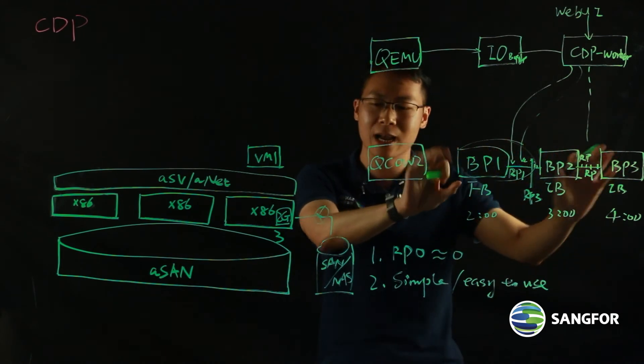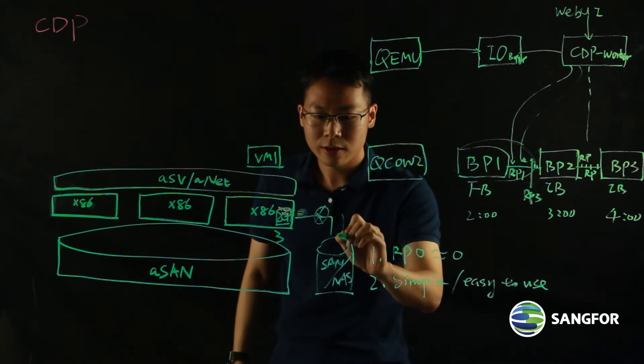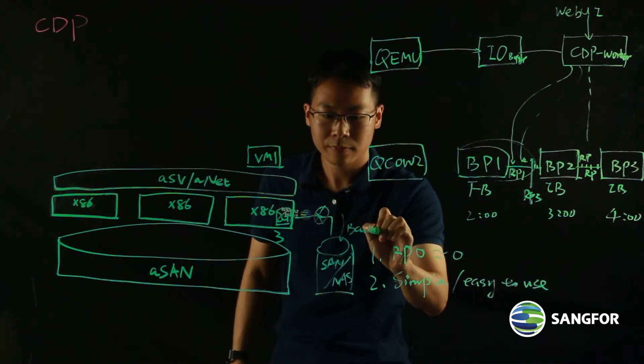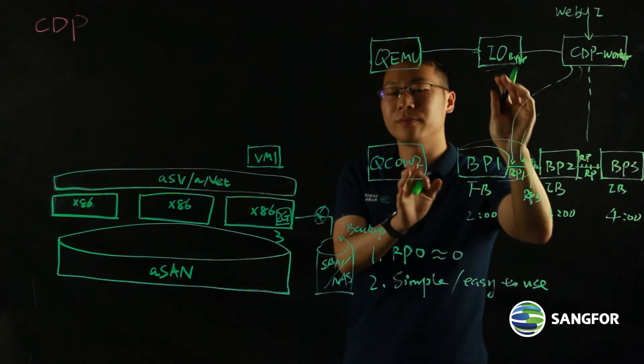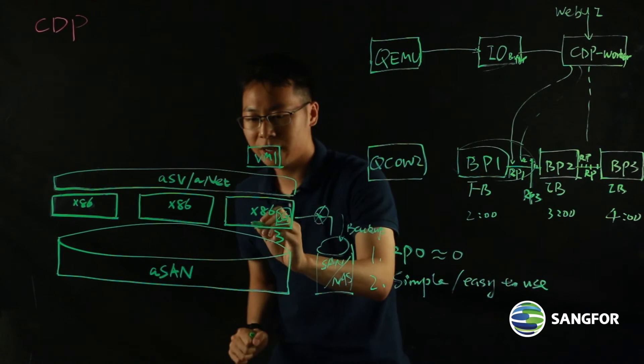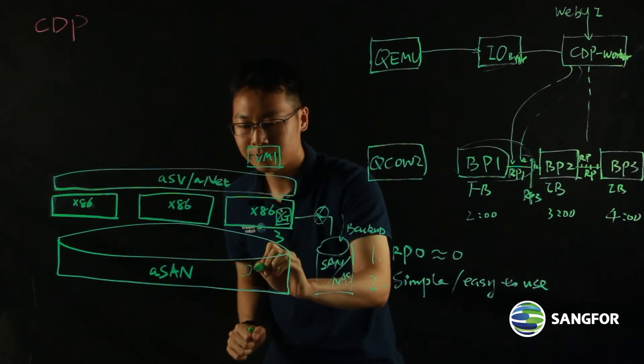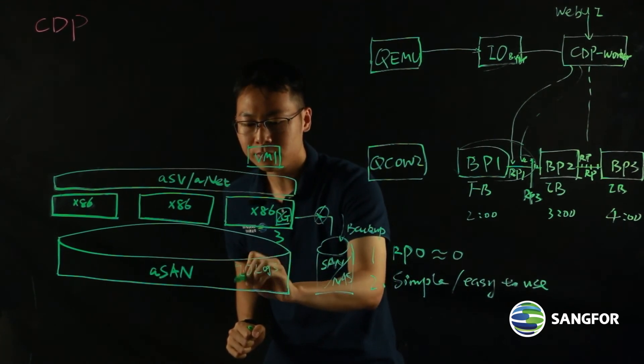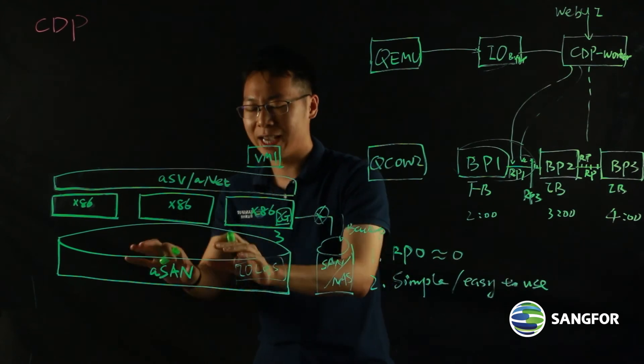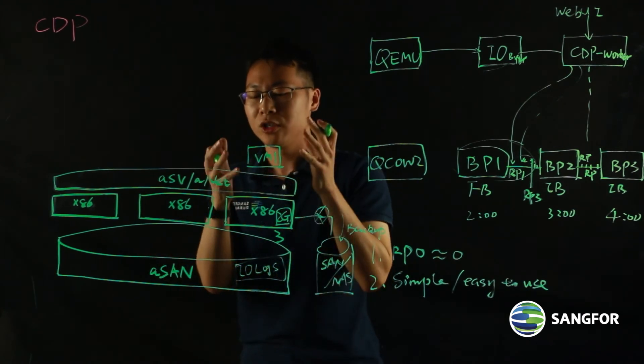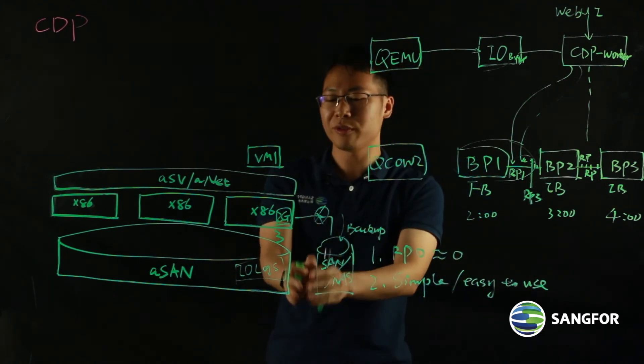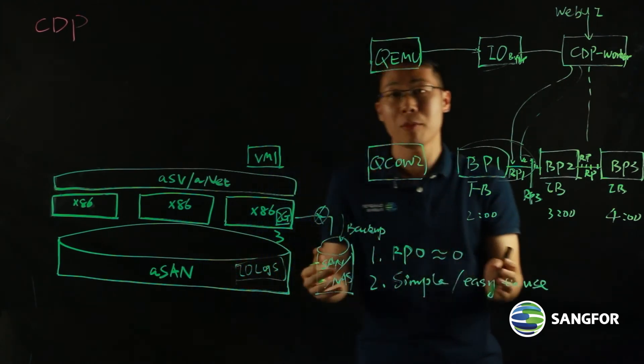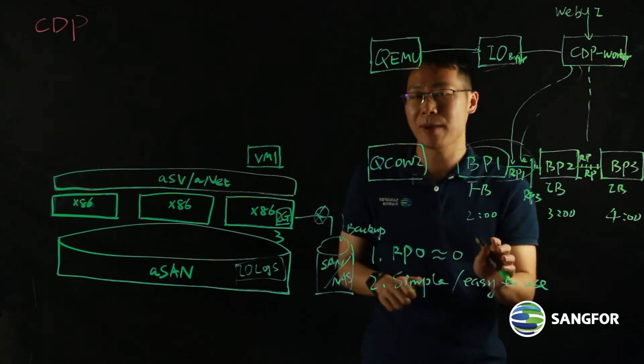So once the storage is attached to the HCI, you can put your backup files. All those backup points, the backup files can be put here. And for the CDP IO logs, it's better to put it on HCI. So you have the ASAN, you can store your IO logs on the ASAN to separate the repository for the two different files. In that way, the performance of your CDP will not be impacted.